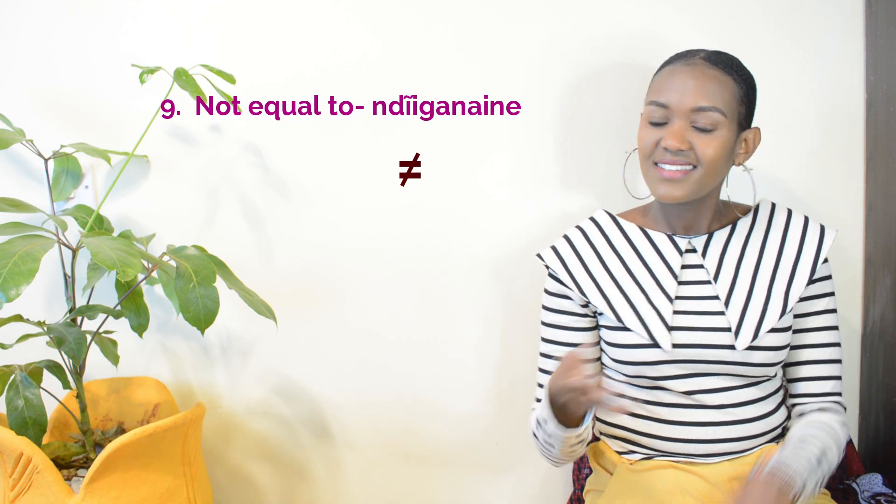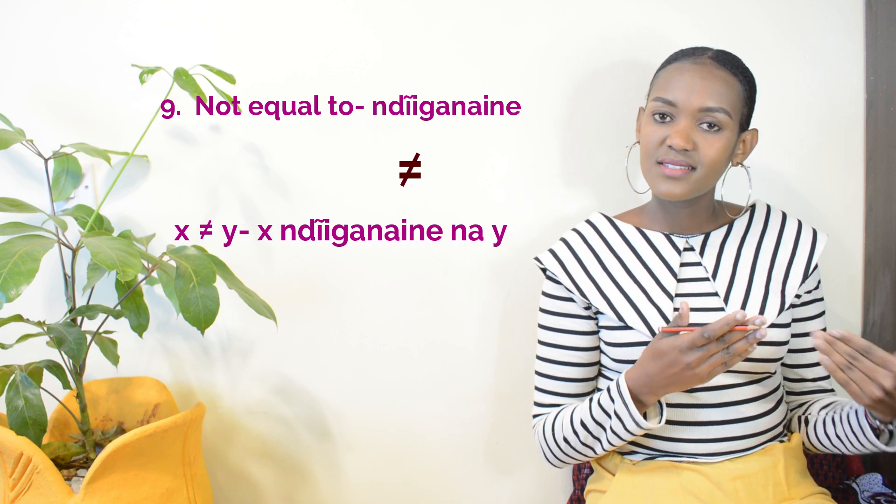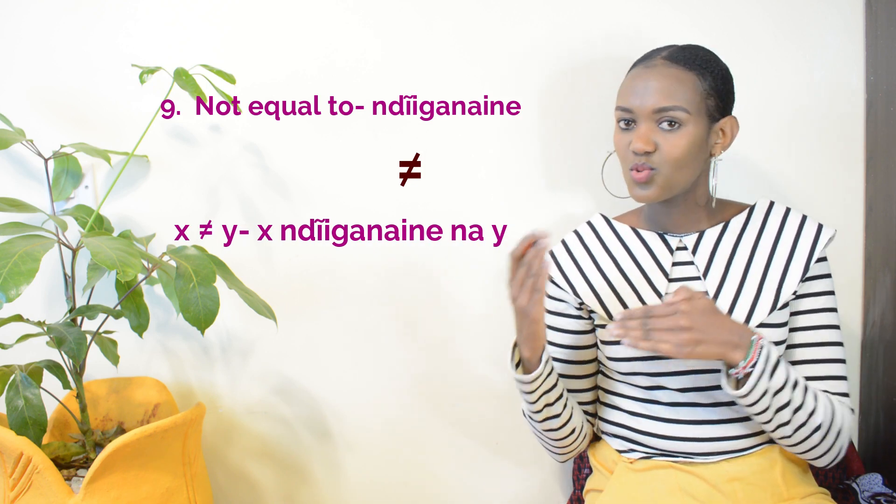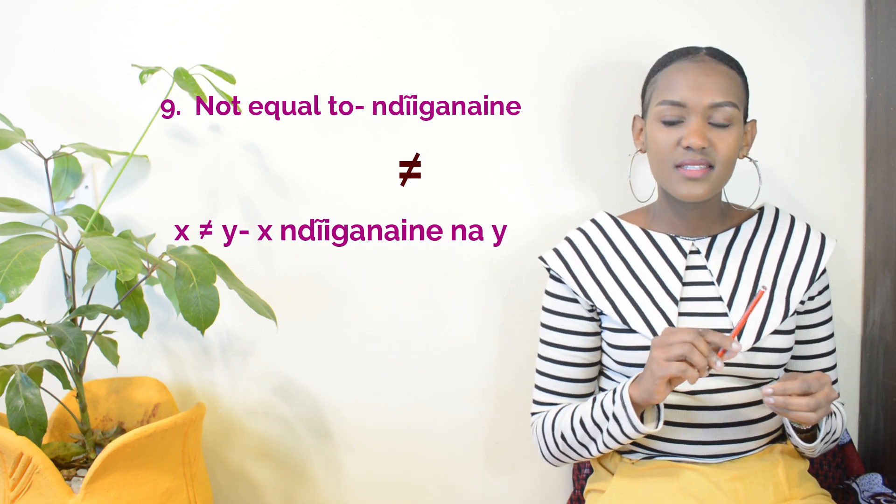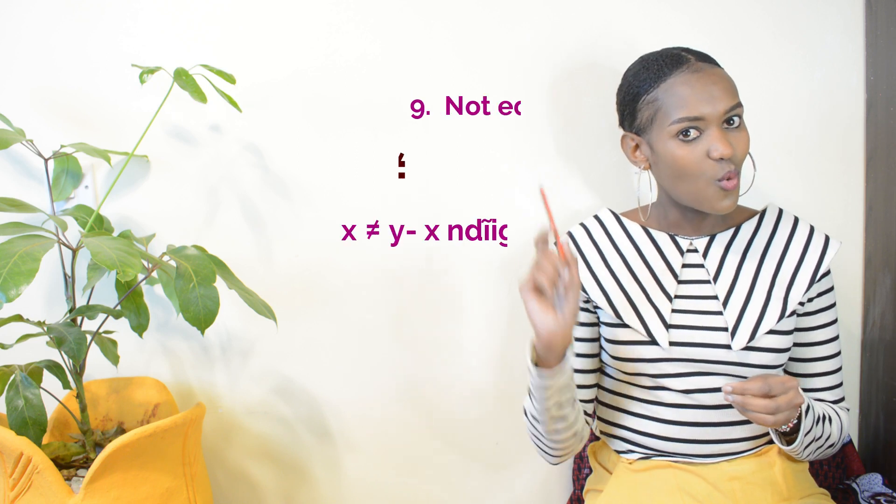Not equal to — you know this sign — is 'deiga naine'. If you had 'x is not equal to y', we would say 'x deiga naine na y'. I don't know how we would say the square root of something in Kikuyu — if you have a suggestion, please feel free to add to the comment section. And infinity — because infinity is like 'haina unisho' — so we would say 'tenena tene'.